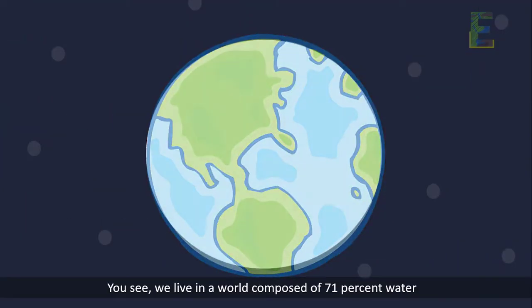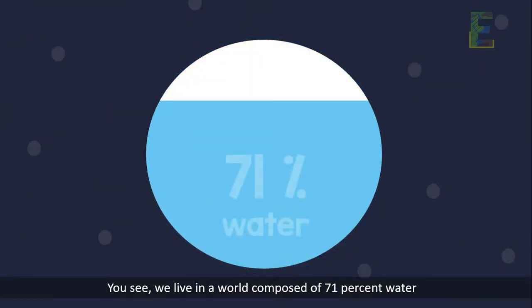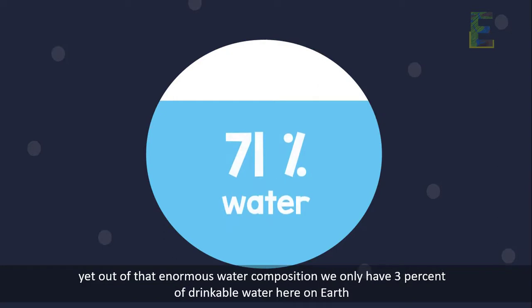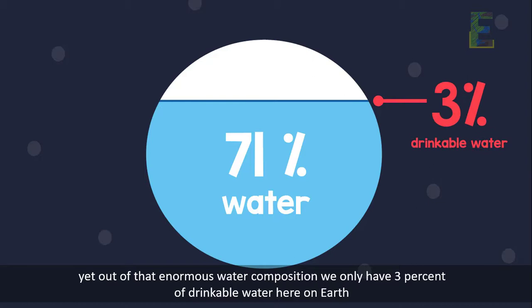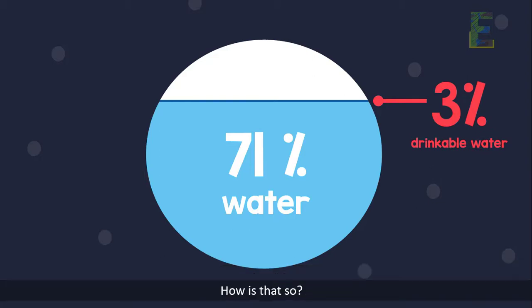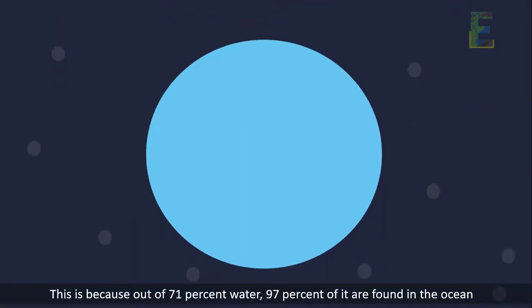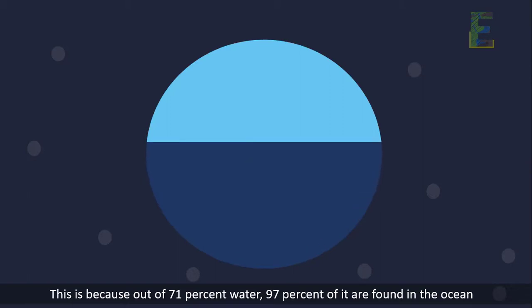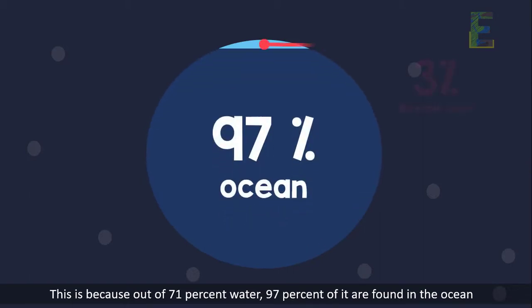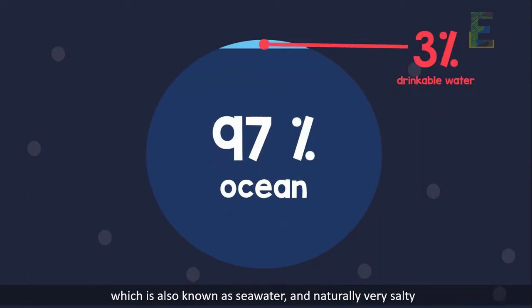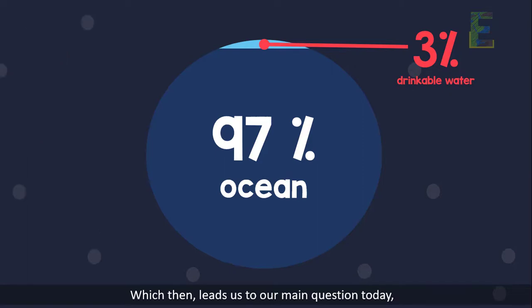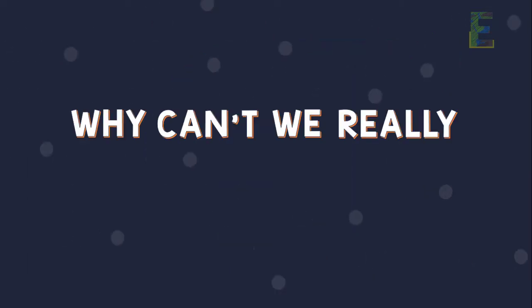We live in a world composed of 71 percent water, yet out of that enormous water composition we only have three percent of drinkable water here on Earth. This is because out of that 71 percent, 97 percent is found in the ocean — known as sea water — and is naturally very salty, which leads us to our main question: why can't we really drink sea water?